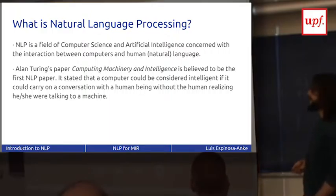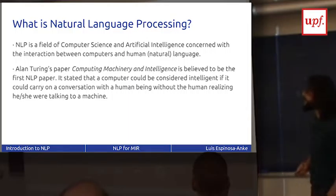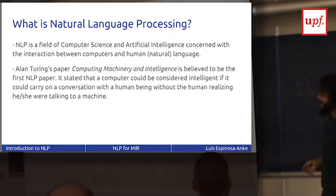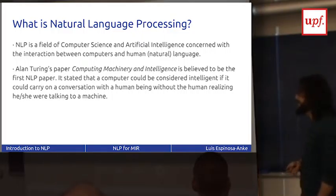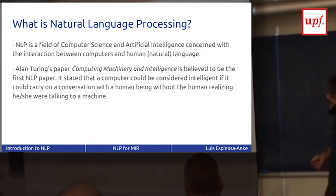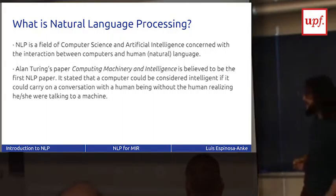NLP is a field of computer science and artificial intelligence concerned with the interaction between computers and human natural language. It's believed that Alan Turing's paper, 'Computing, Machinery and Intelligence,' was the first proper NLP paper. It stated that a computer could be considered intelligent if it could carry on a conversation with a human being without the human realizing they were talking to a machine. From there, things have evolved a lot.